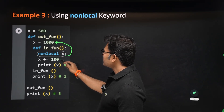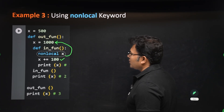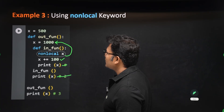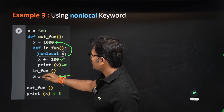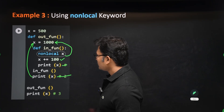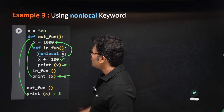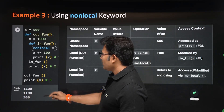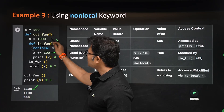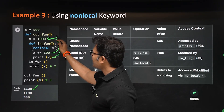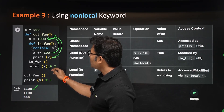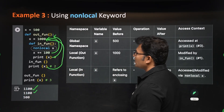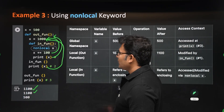When you write 'nonlocal x', it refers to the closest enclosing x, which is 1000. Incrementing it by 100 gives 1100, so 1100 is printed inside the inner function. Inside the outer function, the local x value has been permanently changed to 1100, so 1100 is printed there as well.